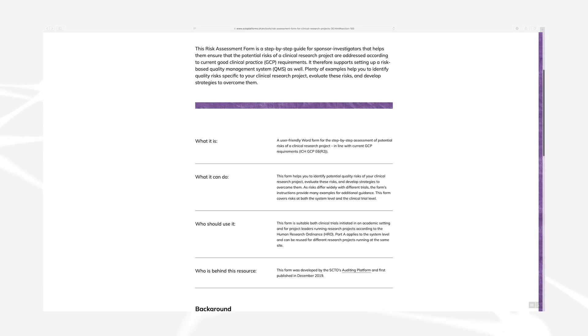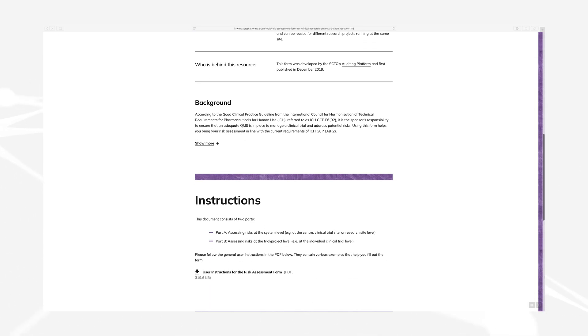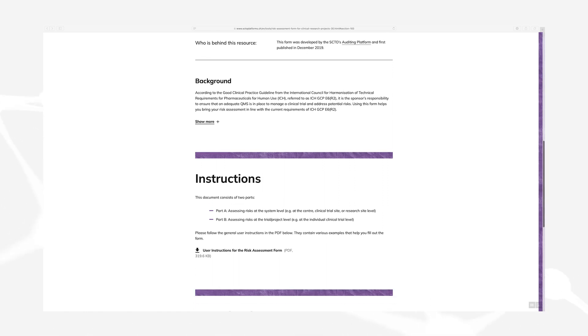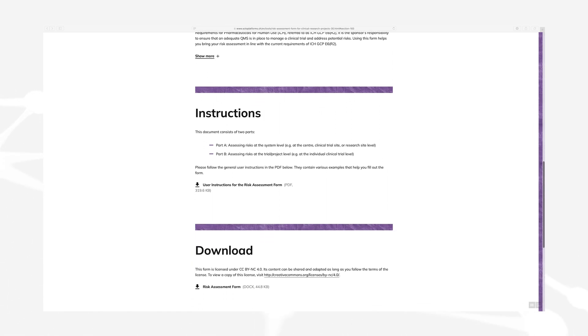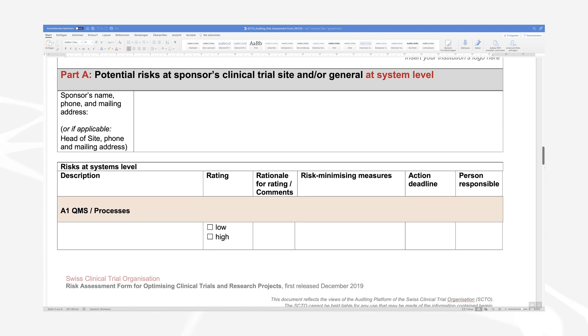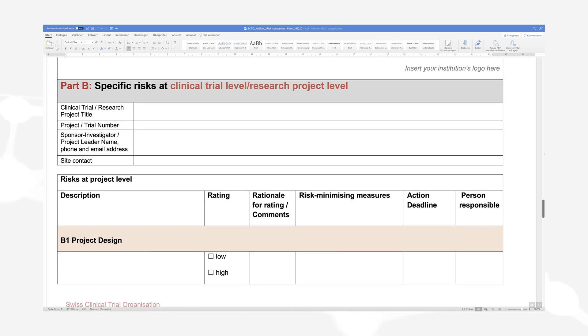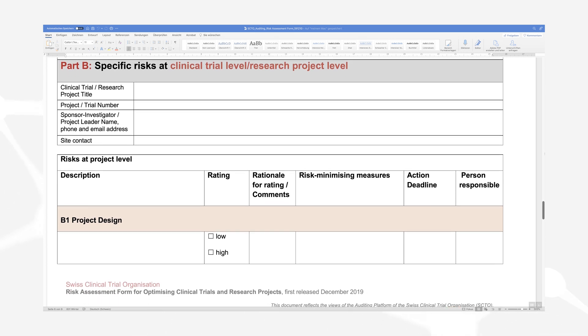The risk assessment form comes along with user instructions, practical examples, and a step-by-step guidance to complete Part A and Part B of the form. With Part A, you can assess potential risks at system level, for example at an entire clinic. And with Part B, you can address specific risks at project or trial level.